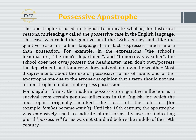...the school does not own or possess the headmaster, men don't own or possess the department, and tomorrow does not and will not own the weather. Most disagreements about the use of possessive forms are due to the erroneous opinion that the term should not use an apostrophe if it does not express possession. For singular forms, the modern possessive inflection is a survival from Old English genitive inflections. Until the 18th century, the apostrophe was extensively used to indicate plural forms, and its use for indicating plural possessive forms was not standard before the middle of the 19th century.